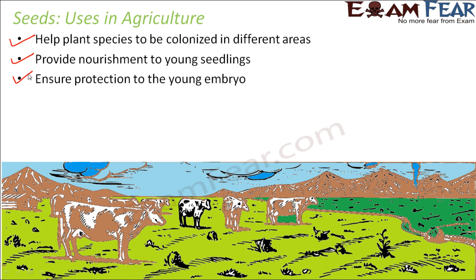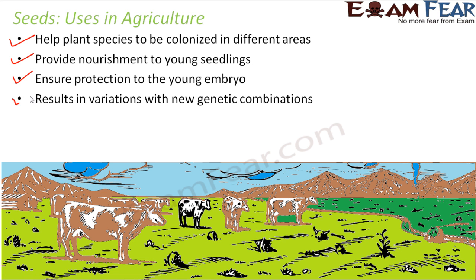Having seeds is very advantageous: first, it gives us the flexibility to grow plants wherever we want; it also keeps the embryo very safe inside; and it provides nourishment so that the plumule and radicle can grow to form the root and shoot system. Seeds also result in variations with new genetic combinations, since the embryo is formed by fusion of male and female gametes, which can produce new traits in the newly formed plants.